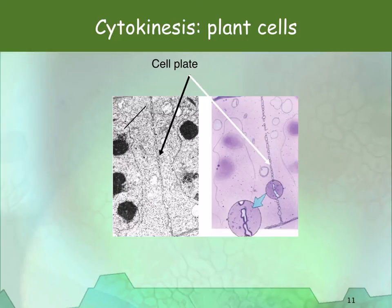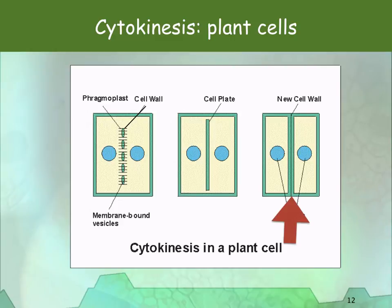Two photos show the cell plate forming. The cellulose is placed on the middle lamella, and the wall formed is the primary cell wall, which will allow some growth. The wall may later be thickened using cellulose or lignin to form a secondary wall. Gaps where no wall forms become the plasmodesmata.